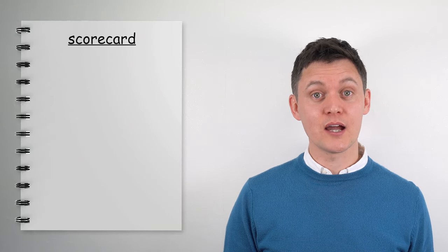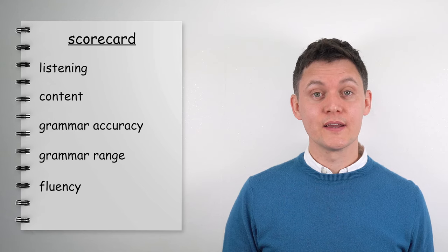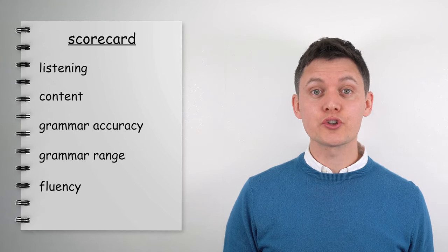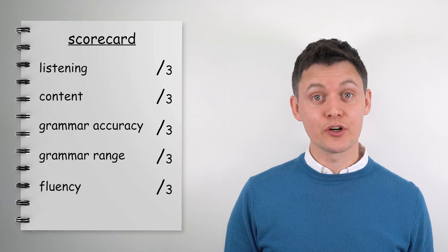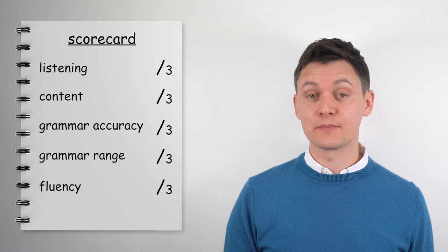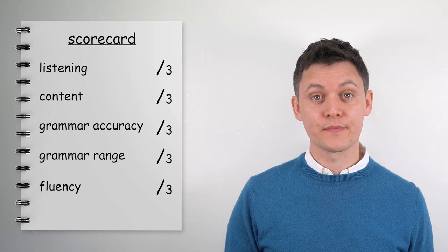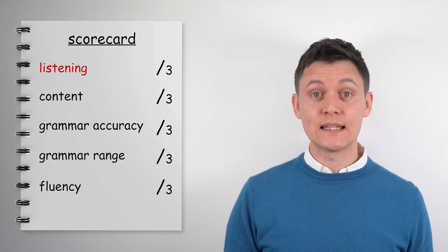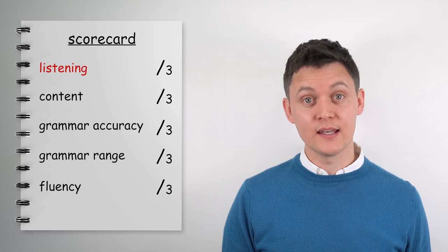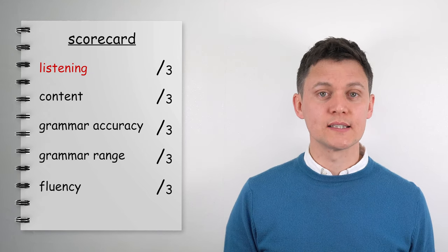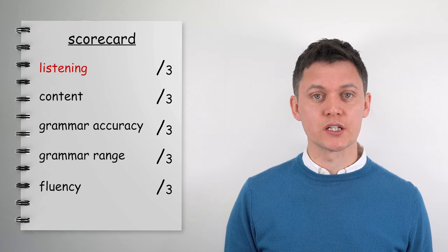There are five areas that I want you to look at. In each area you should give yourself a score out of three — simply zero to three. This makes it very easy for you to score yourself. In the first section we're looking at listening. You will hear the question and then hear it again. So how was your listening? Could you hear it straight away or did you have to re-listen to the question?